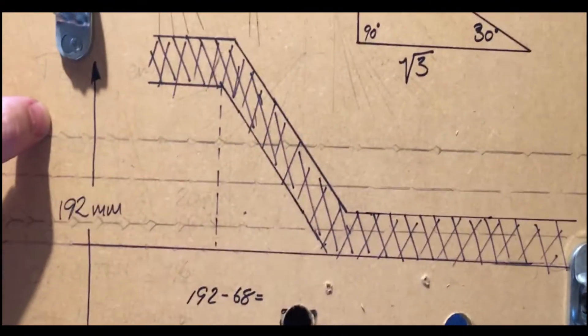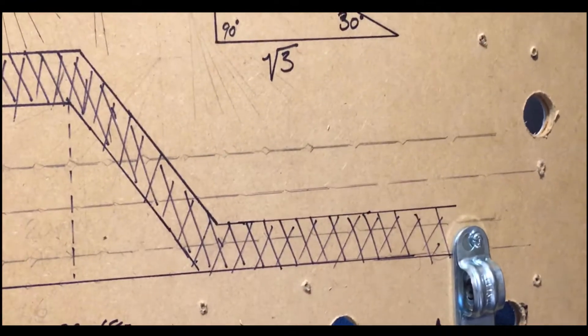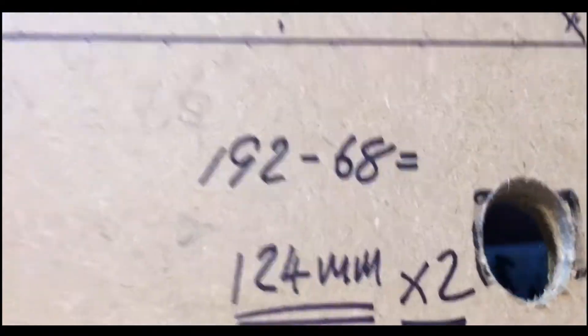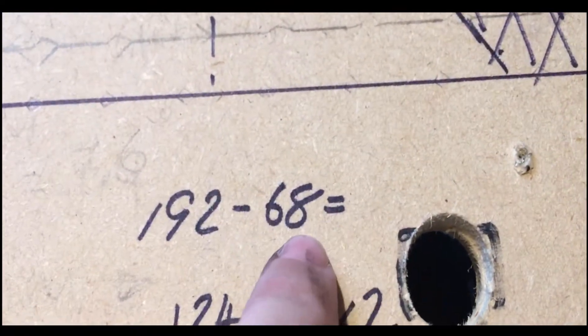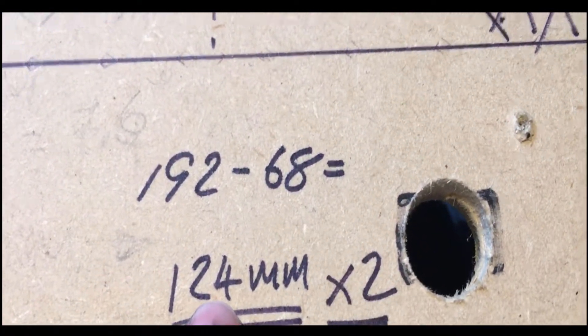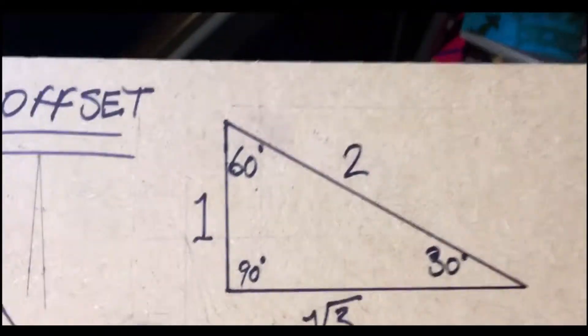192mm off the bottom of the board, 68mm off the bottom of that board. Here's the math for it: basically 192 subtract 68 will give you 124. Now to get a 30-degree bend...